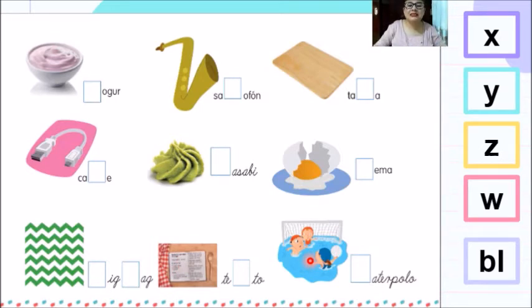Ahora vamos a escribir la letra que nos hace falta. Aquí dijimos que tenemos un yogur. En el cuadrito, nosotros debemos de escribir la letra con la que se escribe yogur. Escucha. Yogur, yogur. ¿Qué letra es la que suena? ¡Correcto! Suena la letra Y, que es la Y. Y, entonces, con tu lápiz vas a realizar el trazo de la Y para poder crear la palabra yogur. ¡Excelente, chicos! Vamos por la siguiente.